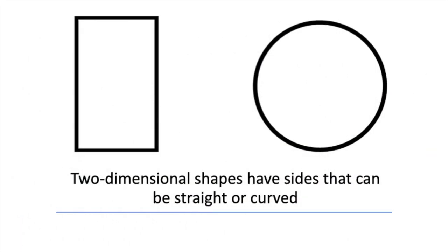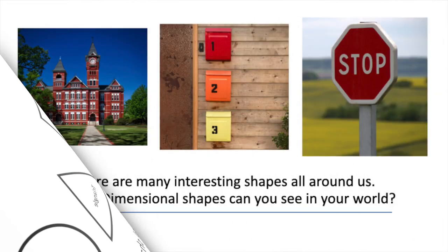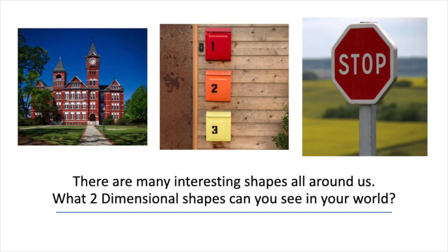Two-dimensional shapes have sides that can be straight or curved. Two-dimensional shapes can have a name like circle or rectangle. There are many interesting shapes all around us. What two-dimensional shapes can you see in your world?